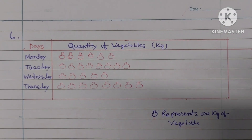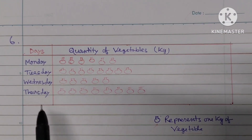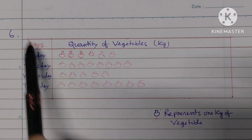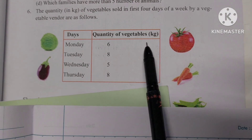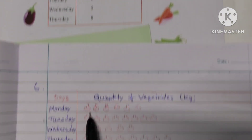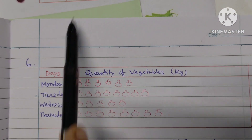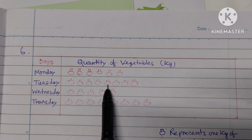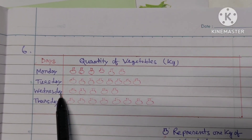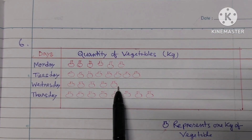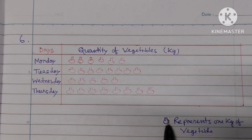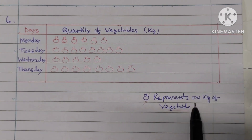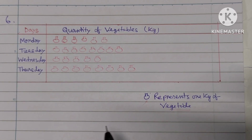Monday has 6 kg of vegetables: 1, 2, 3, 4, 5, 6. Tuesday: 8 kg — 1, 2, 3, 4, 5, 6, 7, 8. Wednesday: 5 kg — 1, 2, 3, 4, 5. Thursday: 8 kg — 1, 2, 3, 4, 5, 6, 7, 8. Each symbol represents 1 kg of vegetables.